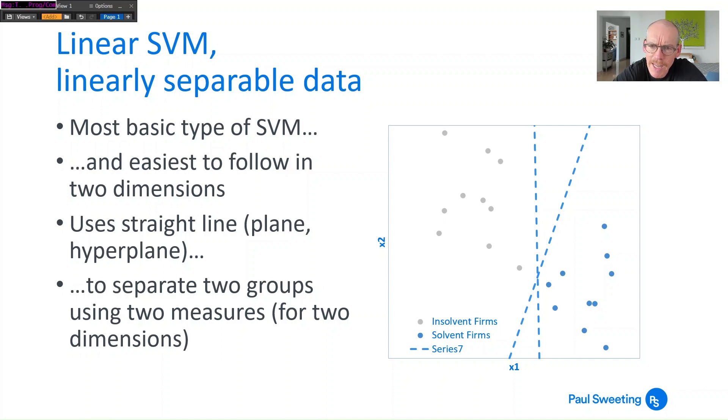Now as you can probably see from this, you've got which I've labeled series seven because I didn't get around to relabelling it, and you've got more than one line here which can separate the data. So the first thing to ask is well what is the best line that we can draw to separate the data and how do we define this?